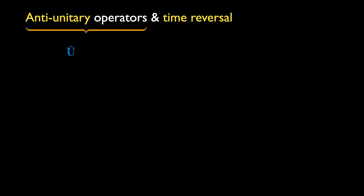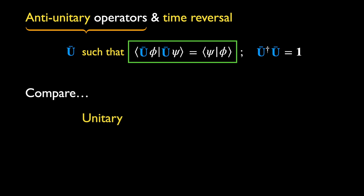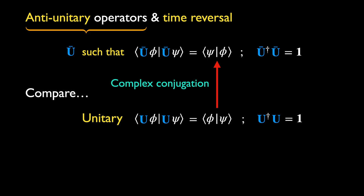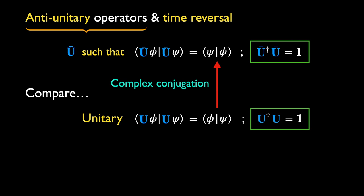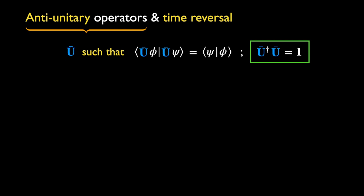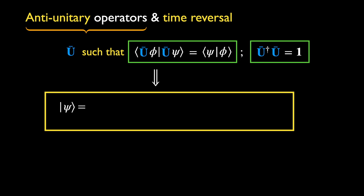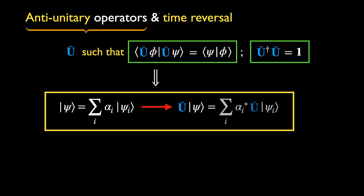Recall the definition of an anti-unitary operator. It is an operator that does not change the inner product of any two vectors apart from a complex conjugation. Compare this with a unitary operator. For both of these operators, their inverses are the same as their Hermitian conjugation. As we have shown in lecture 3, this inner product property implies that it must also be an anti-linear operator. The anti-linear property is almost identical with the linear property, except that an additional complex conjugation must be applied to the coefficients of the superposition.